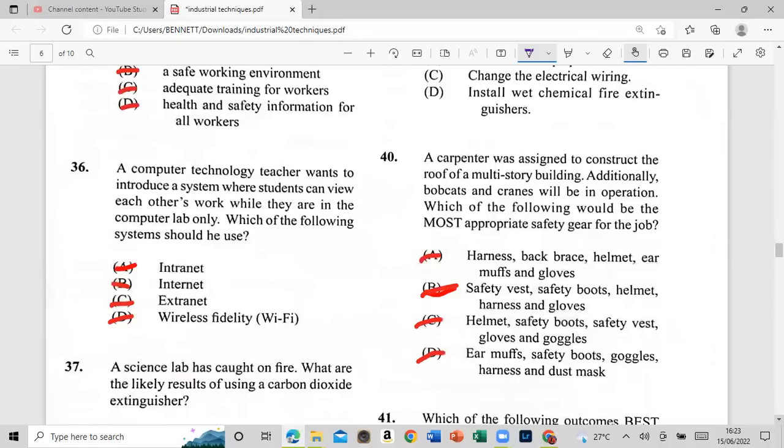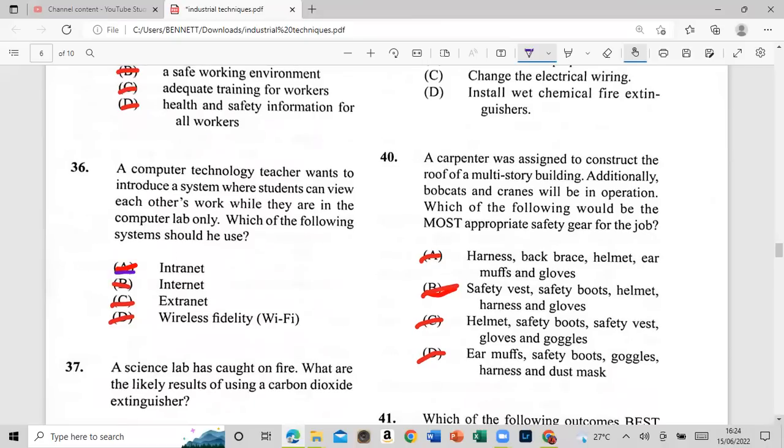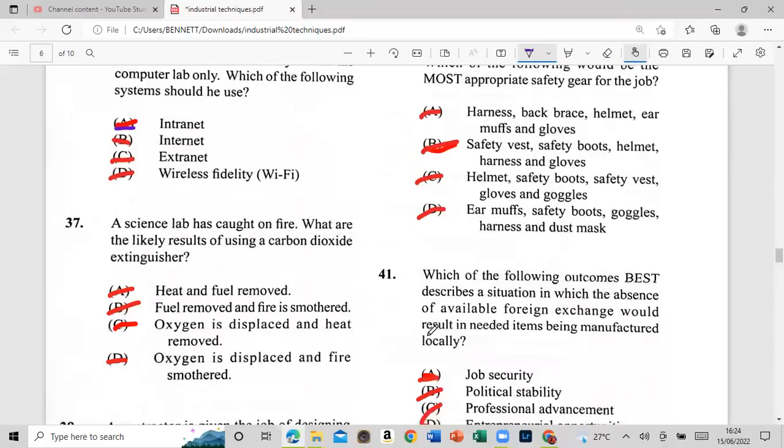A computer technology teacher wants to enter to a system where students can do each other work, each other's work while they are in the computer lab only. Which of the following system would be used? Is it the internet, the internet, the extranet, the wireless fidelity, or the Wi-Fi? Which is that? If you had said A, internet, but it's internally now, yeah. Careful, you don't put up an internet now. Don't put up on the personal things, you get the mercy. Little people, the pervert, everybody, everybody.